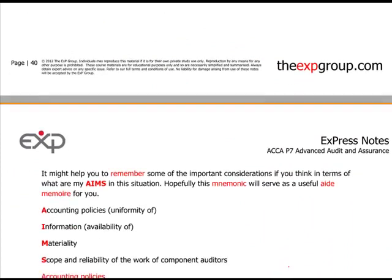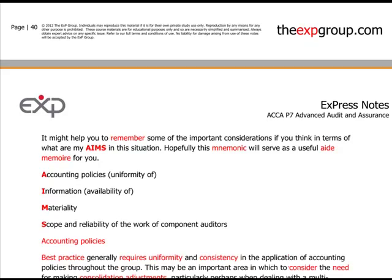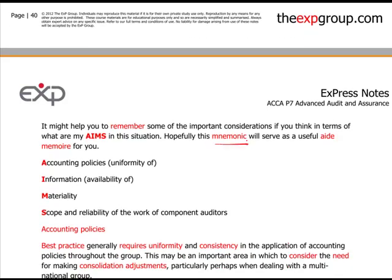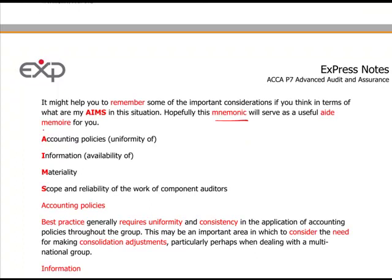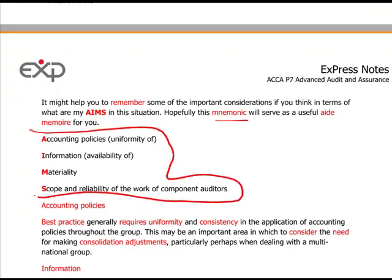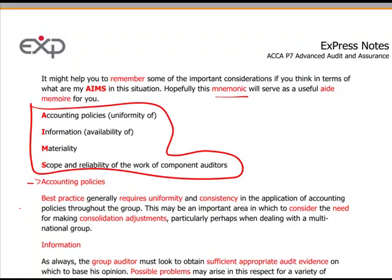It might help you to remember some of the important considerations if you think in terms of what are my aims in this situation. This is a mnemonic that will hopefully help to remind you. AIMS stands for Accounting policies, Information, Materiality and Scope. What are these? Well, accounting policies — what you're looking for here is best practice. Generally, this requires uniformity and consistency in the application of accounting policies throughout the group. It's no good having a subsidiary doing something completely different to another subsidiary, because that's just not going to work when you come to consolidate your group situation.